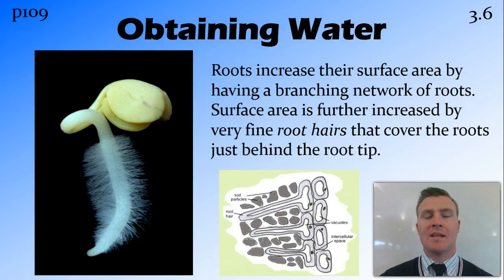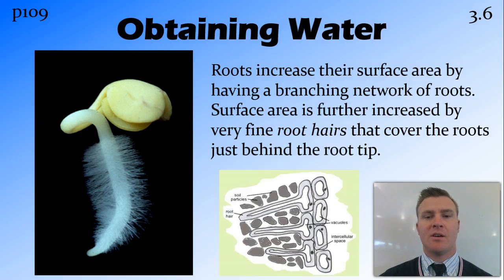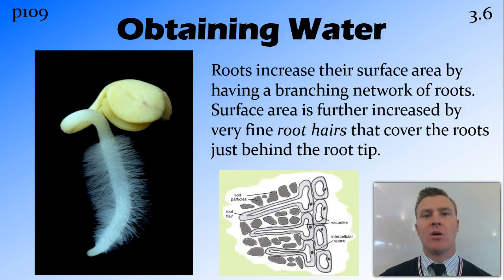For roots to get as much water as they can, they have a branching network to increase their surface area. By having a large network, we have a large surface area. To further increase this surface area, they have little tiny cells called root hairs, which are little filaments that stick out from the root and increase that surface area, therefore increasing the amount of root that is in contact with the dirt around them.